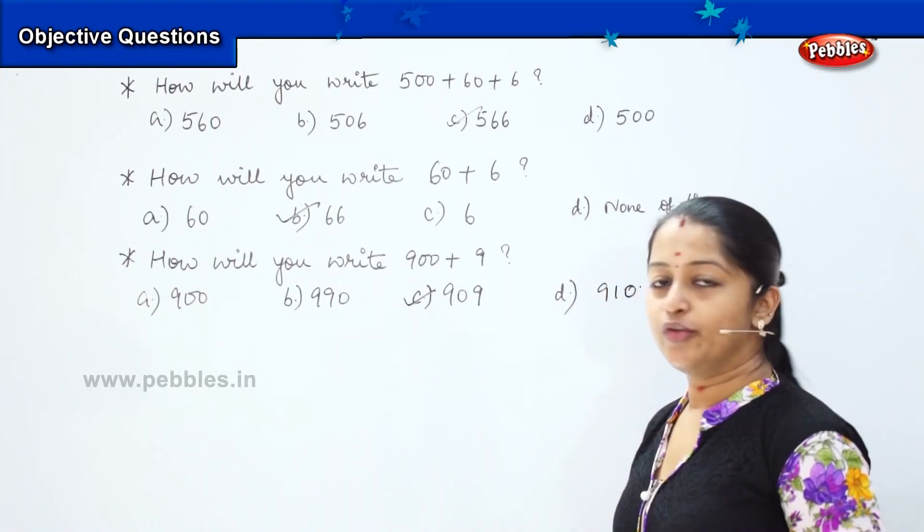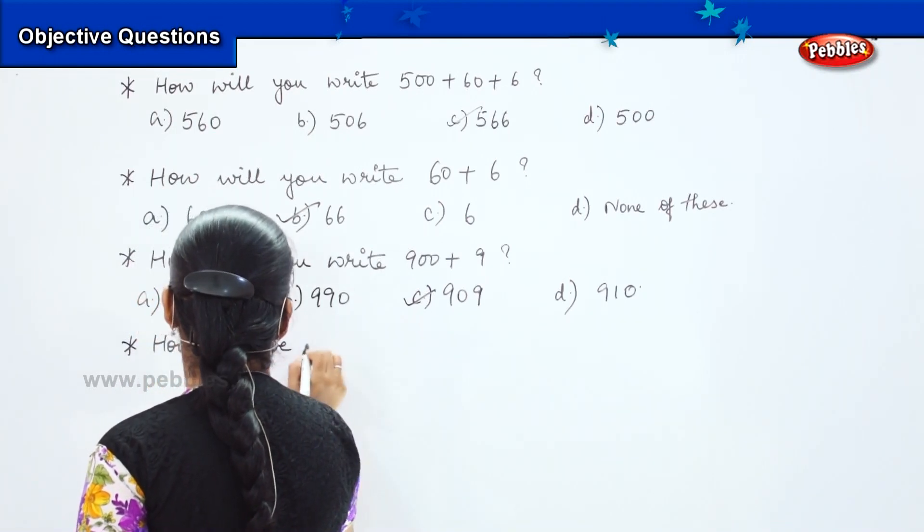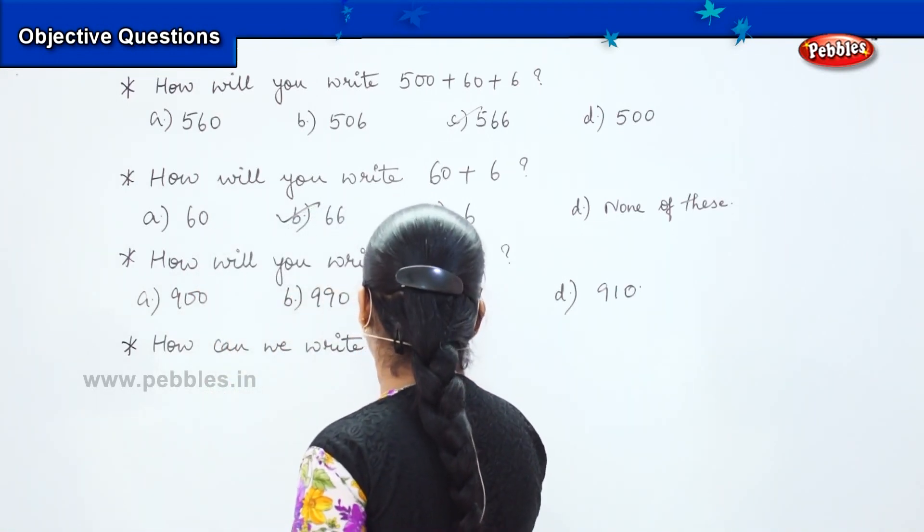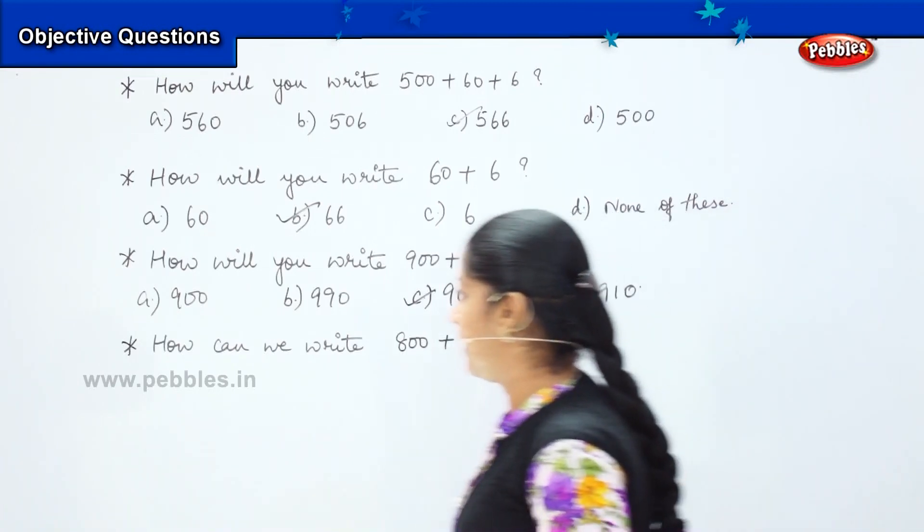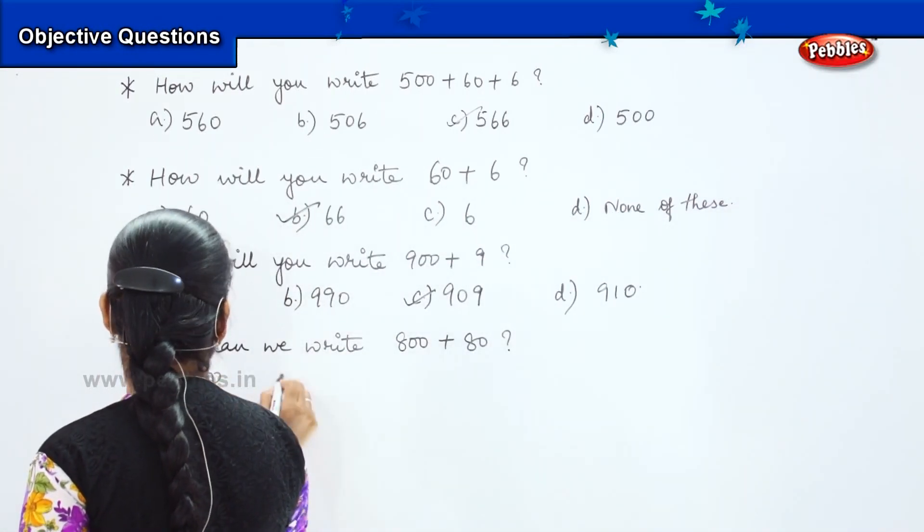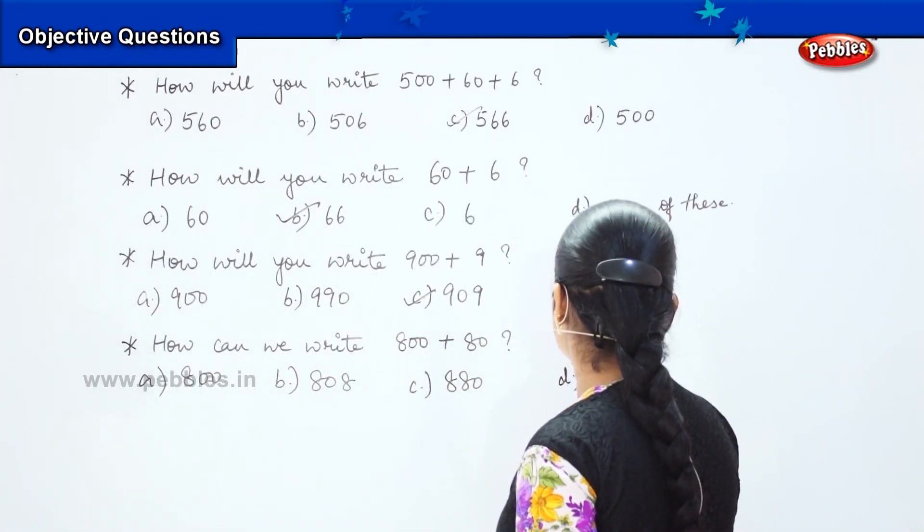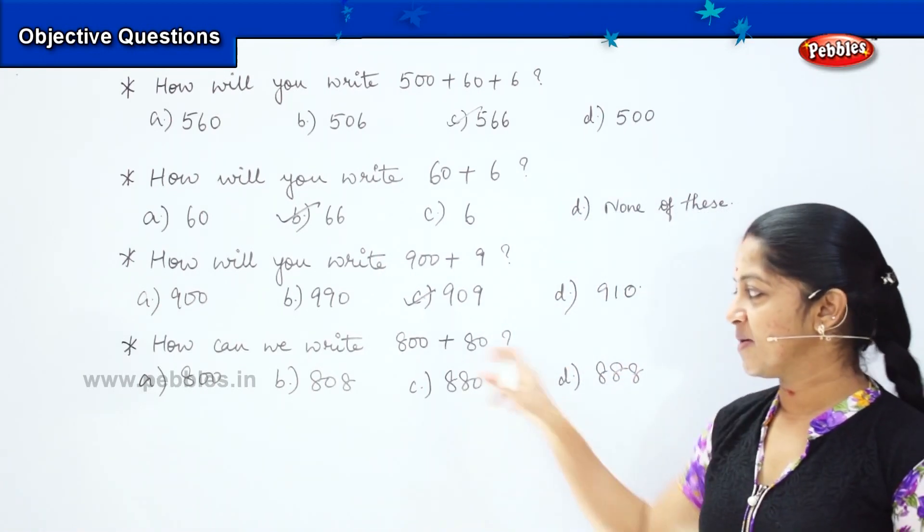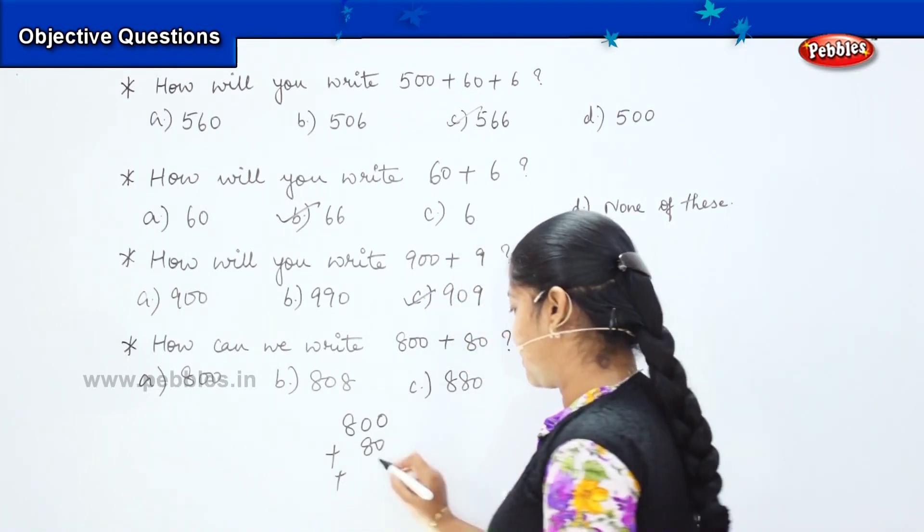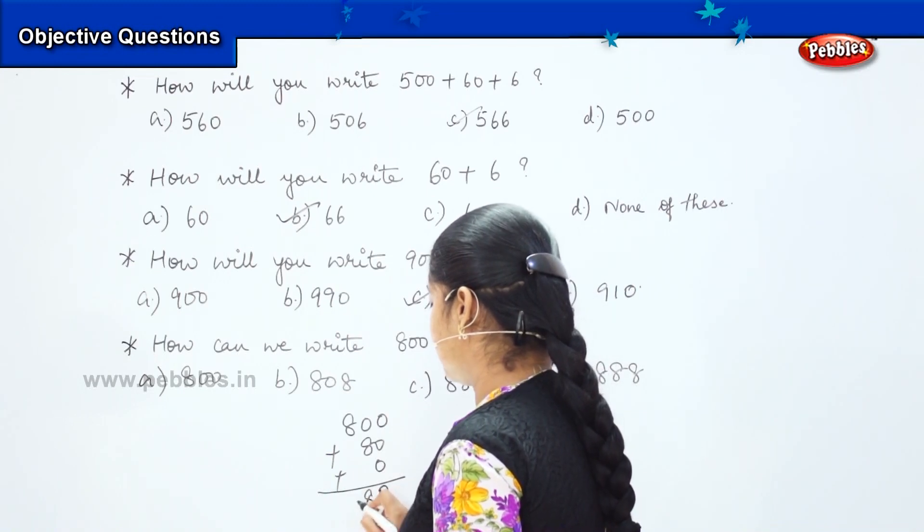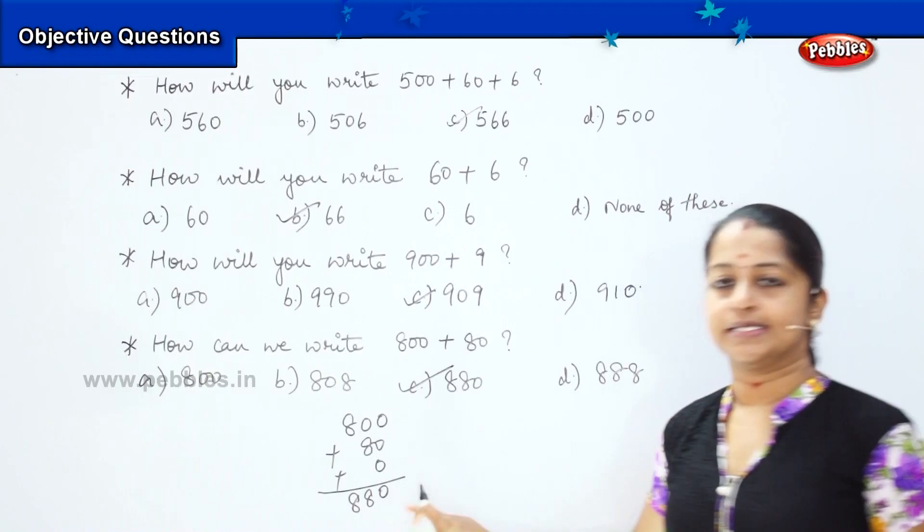Is it interesting children? Shall we do few more sums? Here it goes. So my next question is, how can we write 800 plus 80? And my option says 800, 808, 880, and my last option says 888. So what is my first step? You will be writing the sum 800 plus the next is given as 80. Do you have any other number? No. So it is 0. So 0, 8, 8. So where can you find this? It is option C. So my correct answer is 880.